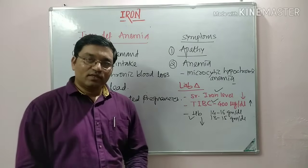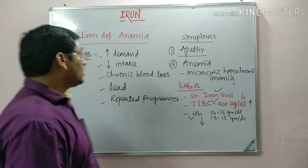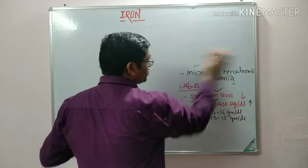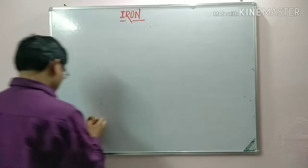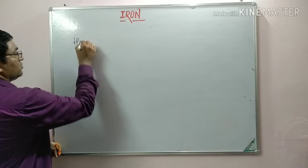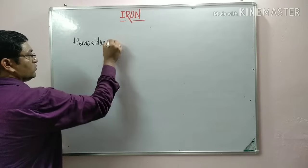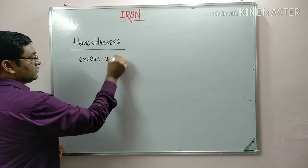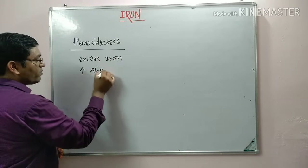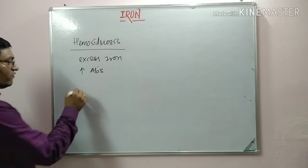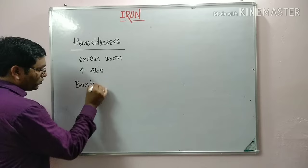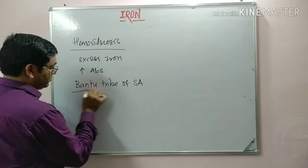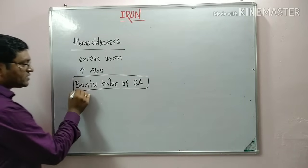Two important diseases related to iron excess include hemosiderosis and hemochromatosis. In hemosiderosis, there is excess iron due to increased absorption of iron. It is typically found in Bantu tribes of South Africa, which is why it is also known as Bantu siderosis.